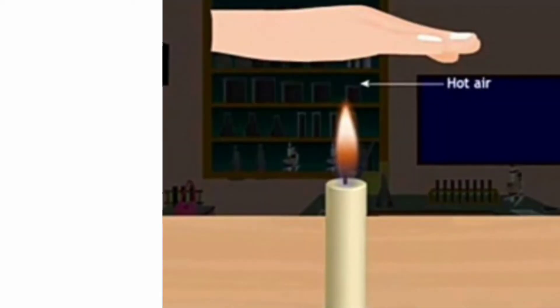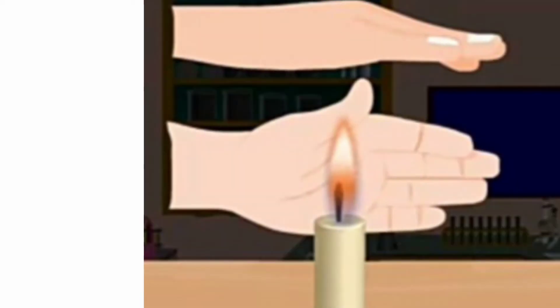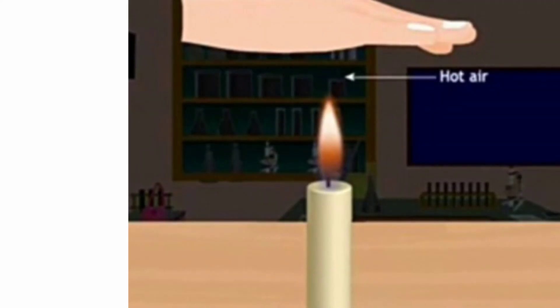Let us understand with another example. When you place your palm above a flame, you feel its hotness. But when you place your palm on the other side of the flame, the area will feel colder. Why? Because the air above the flame becomes hot and moves upward. This is convection method.